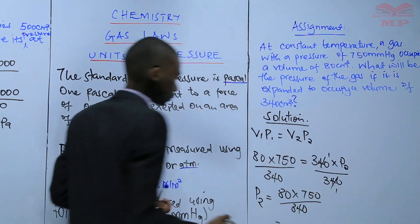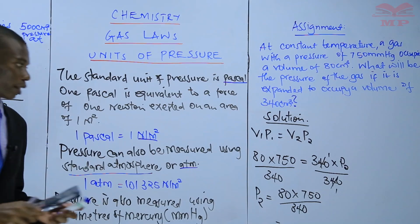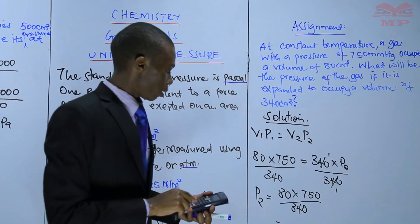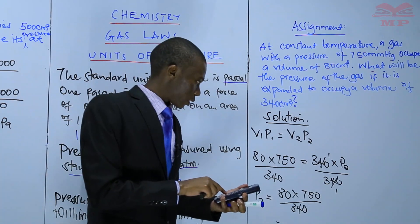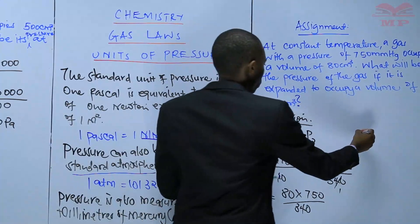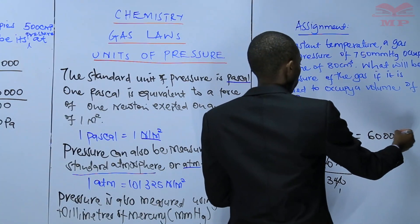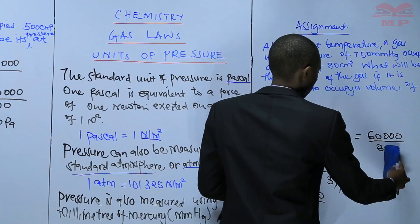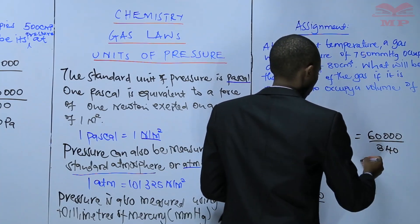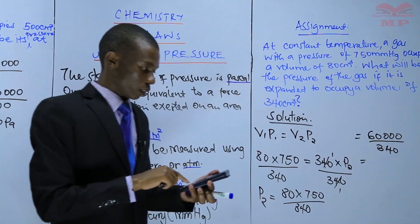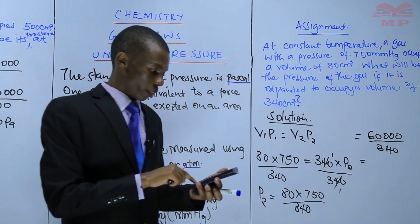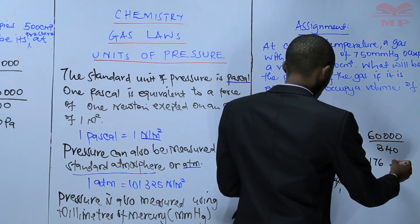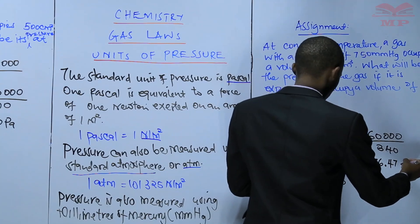Which will be, if you have your calculator, you can calculate that: volume 1 is 80 multiplied by pressure 1 is 750 equals 60,000 divided by 340. If we divide 60,000 divided by 340, this will be 176.4705.